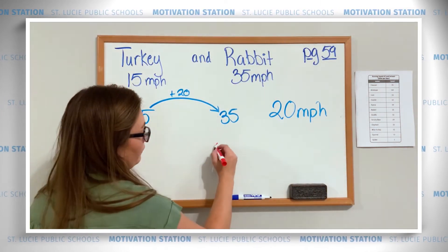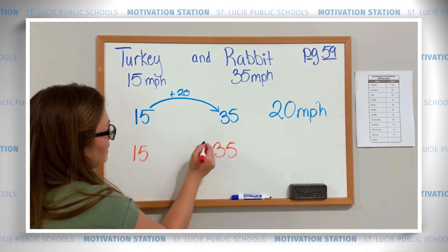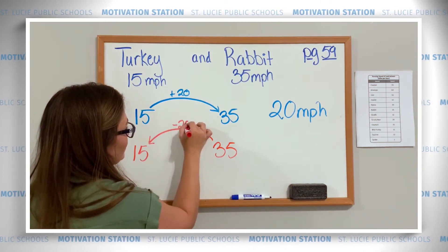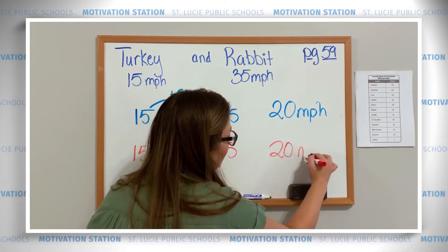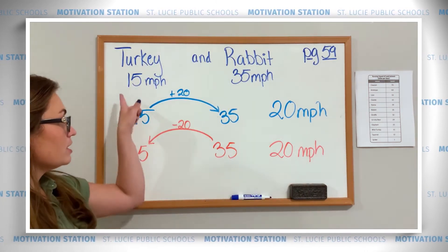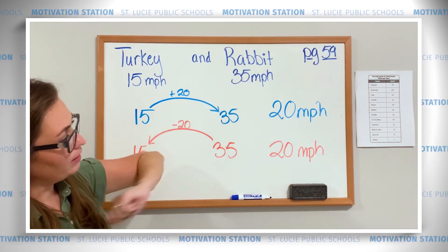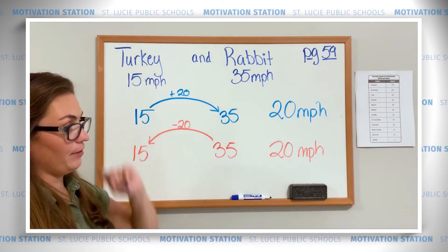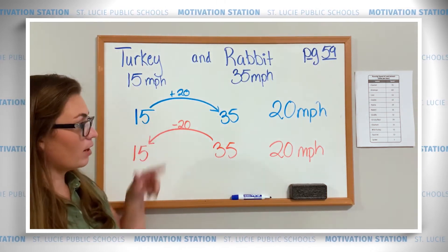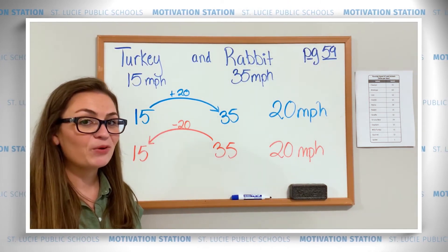Subtraction would look very similar: 35 going down to 15, make my jump, and that's minus 20. It's still 20 miles per hour. The turkey is 20 miles per hour slower than the rabbit, or the rabbit is 20 miles per hour faster than the turkey — however you want to say it. Make sure you have one of these written down as well as what the difference is, and then we'll go to the next one.